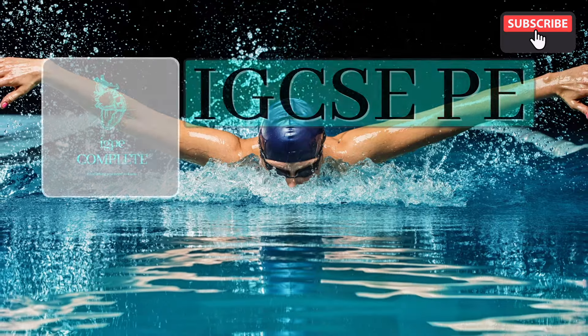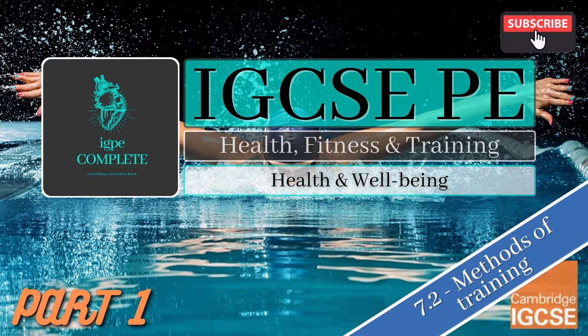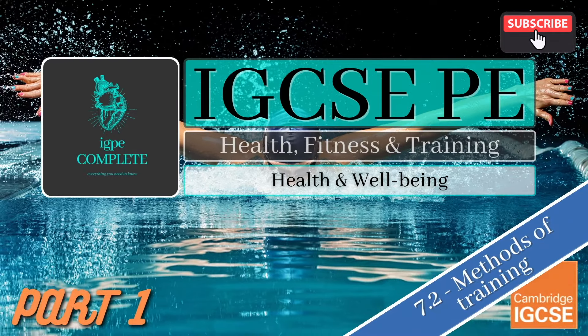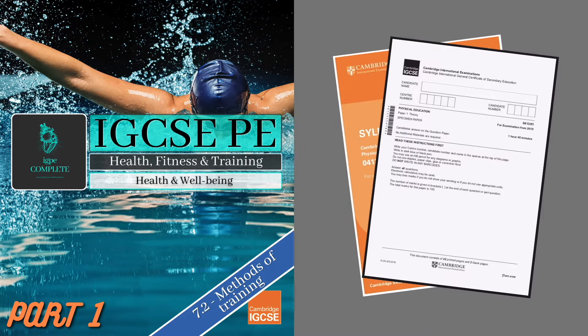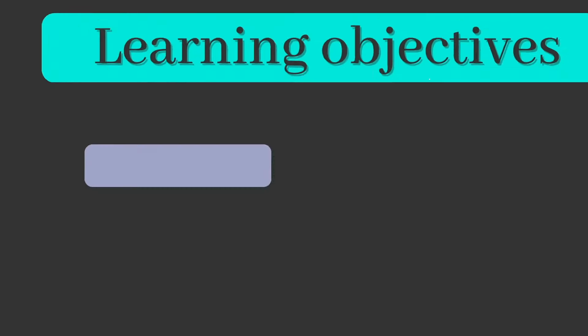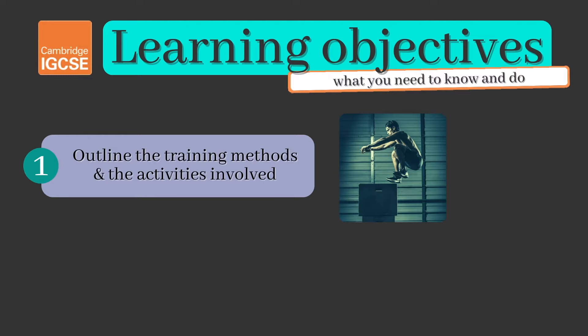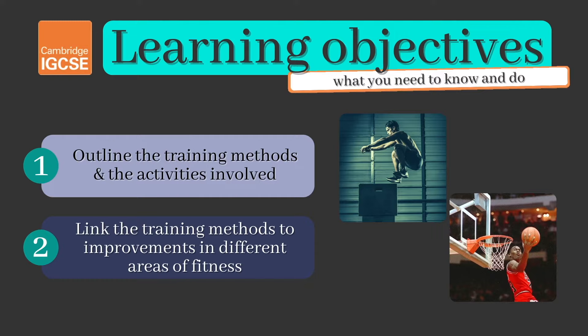Hello and welcome to another complete Cambridge IGCSE PE lesson, part 1 of topic 7.2 on the methods of training. As always, you'll cover absolutely everything you need to know for your exam. Today you need to be able to outline the first four training methods and the activities involved, and link the training methods to improvements in different areas of fitness.